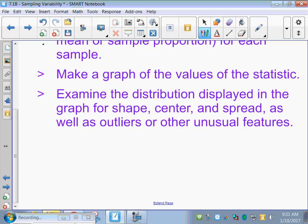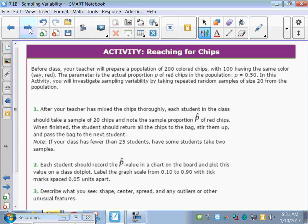After we make a graph of many, many samples, then we would go back to what we learned in Chapter 2, which was SOCS - the shape, the outliers, the center, and the spread, and we would talk about that. Any unusual features.